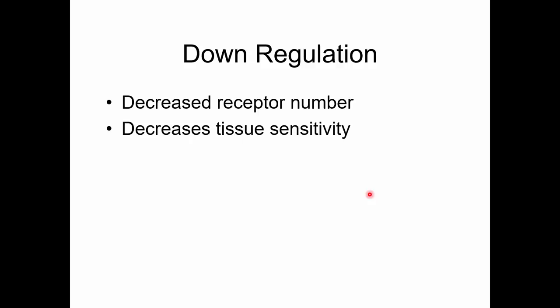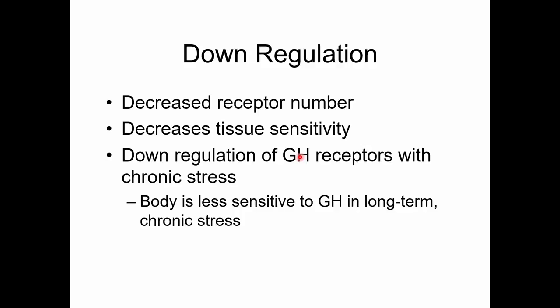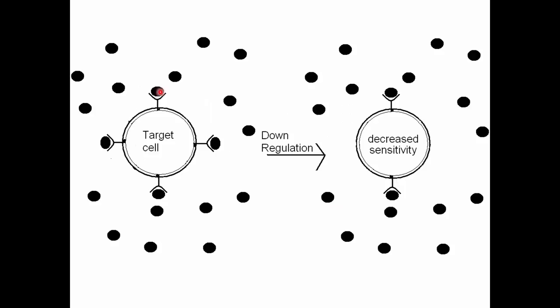In addition to upregulation, we have downregulation - decreased receptor number and decreased tissue sensitivity. For example, growth hormone receptors can be downregulated with chronic stress. If you're chronically stressed, you need energy for survival, so you limit growth by making the body less sensitive to growth hormone. Downregulating from four to two receptors means only two hormone molecules can affect the target cell.